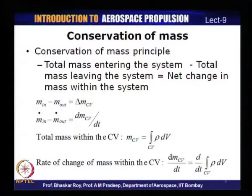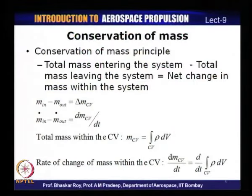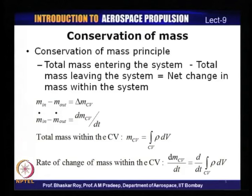To define the first law of thermodynamics for open systems, we also need to understand what is meant by conservation of mass. The conservation of mass law states that the total mass of a particular system will be equal to the difference between the total mass entering the system minus the total mass leaving the system — that is the net change in mass within the system. There is no creation or generation of mass within the system boundaries.